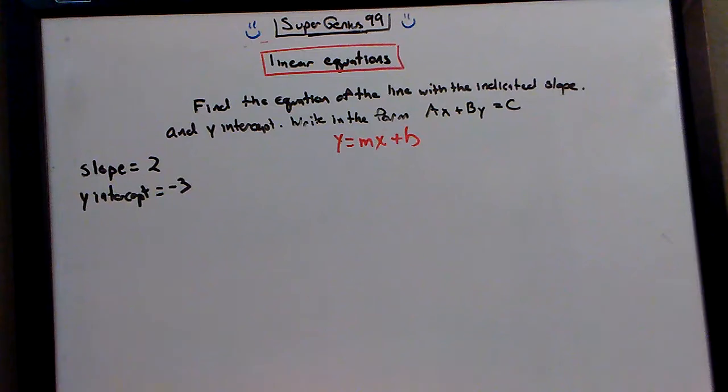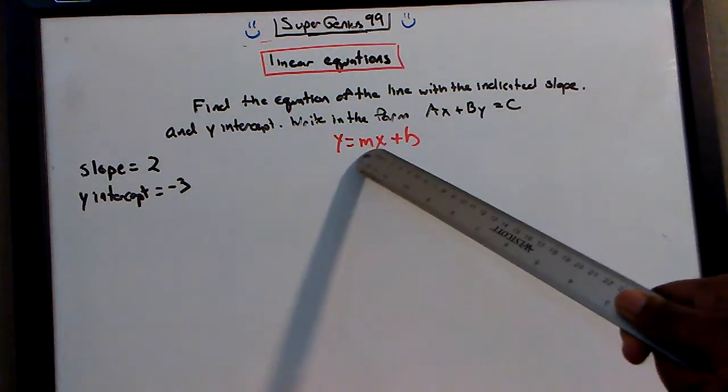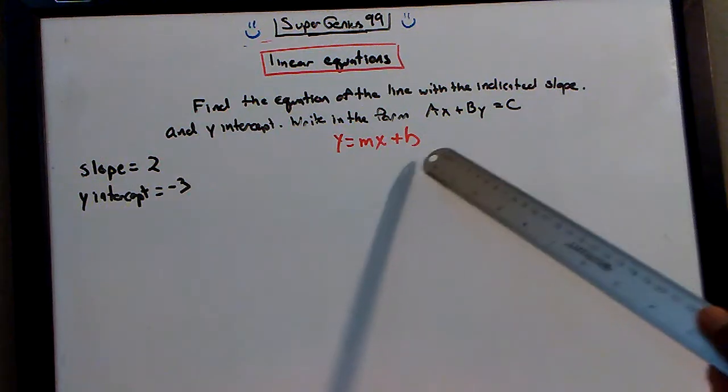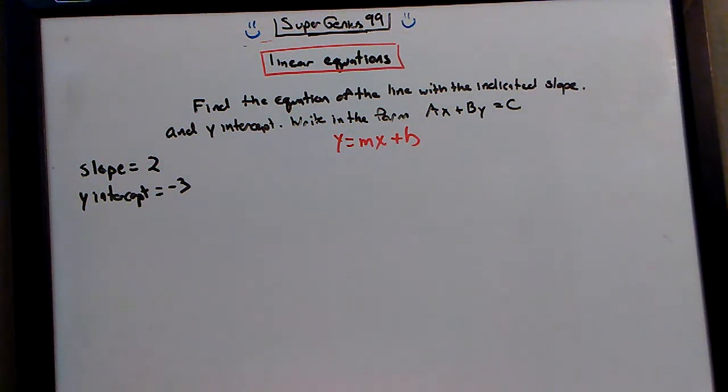With y equals mx plus b, real quick, what is your m? m is your slope. What is your b? b is your y-intercept.